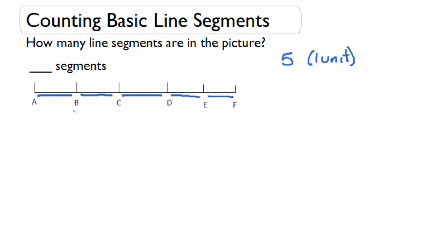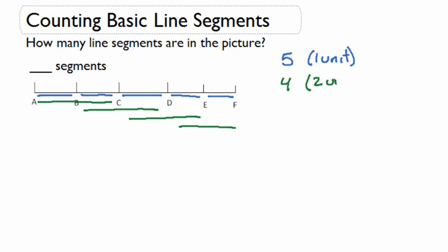How many are there that are two units long? Here we have one, two, three, four. So we have four that are two units.